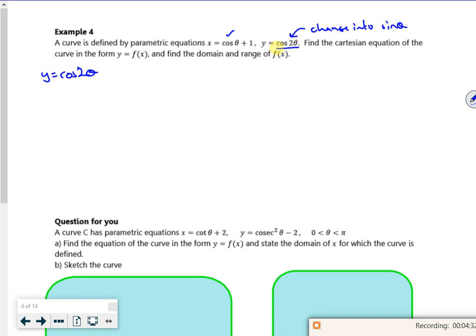So I'd have, I know that cos 2θ is cos²θ - sin²θ. And then if I replace the cos θ with 1 - sin²θ, I've got 1 - 2sin²θ.